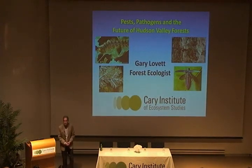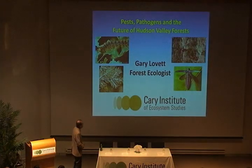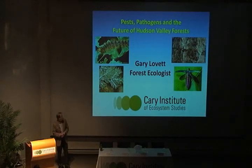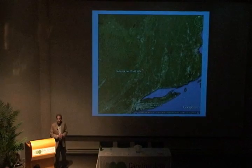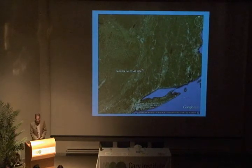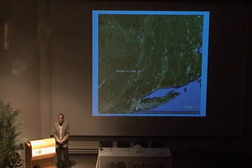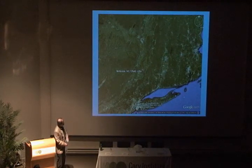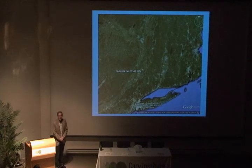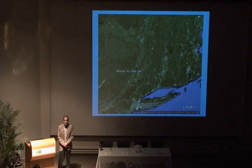I'm going to talk about forest pests and pathogens. Charlie mentioned this starting out, and I'd just like to go into a little more detail than he was able to do in the time that he had. This is a Google Earth image of the Hudson Valley and a little bit beyond. The dark green area in this image is forested land, so you can see we are in a landscape of primarily forested land.